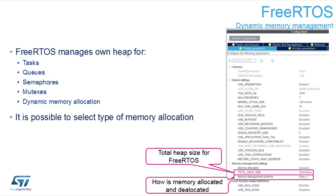You can choose the total heap size in the configuration, which reserves a variable or block in memory passed to FreeRTOS. You then need to choose the algorithm for memory allocation and deallocation, managed by heap 1 through heap 5.